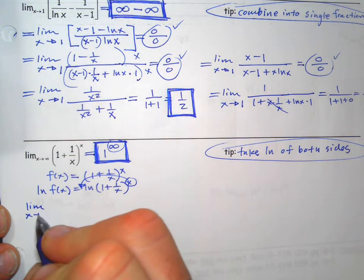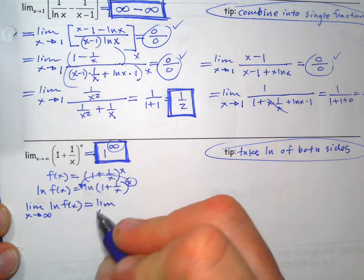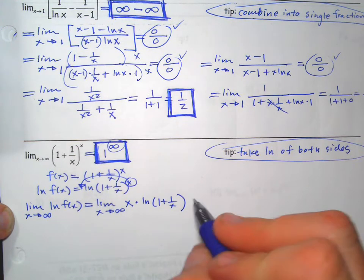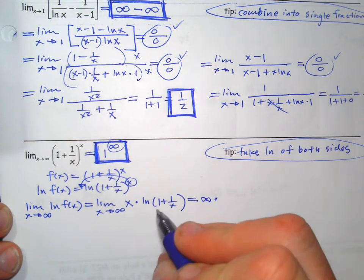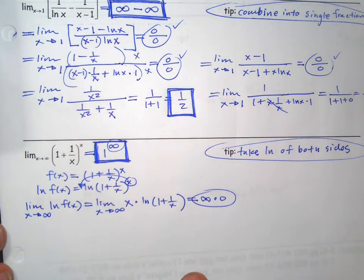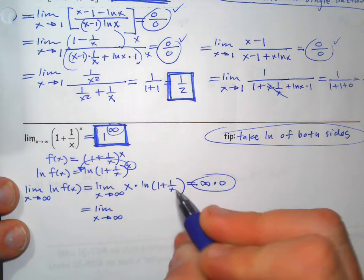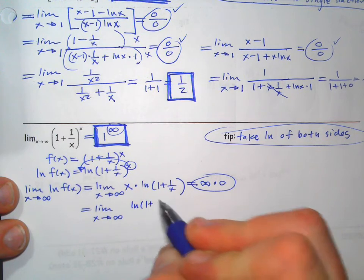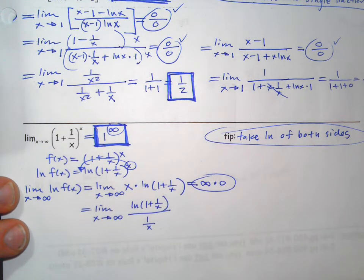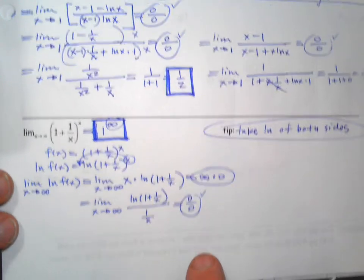We define the thing inside as a function f(x) and take the natural log of both sides, which allows us to bring the exponent out in front using log rules. Then we take the limit as x goes to infinity of natural log of f(x). Plugging infinity in, we get infinity times natural log of 1, which is zero — so this is the infinity times zero form. Now we use the strategy from the first problem: change it to a fraction. Leave the ugly one on top and move x to the denominator as 1 over x. Plugging infinity in gives zero over zero.